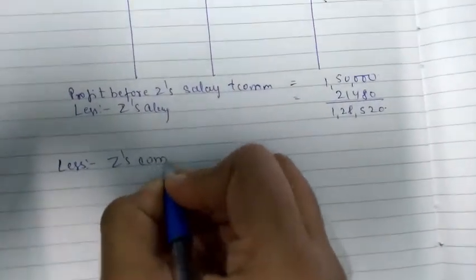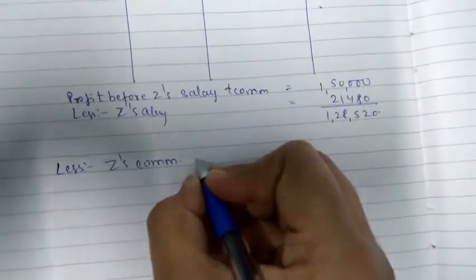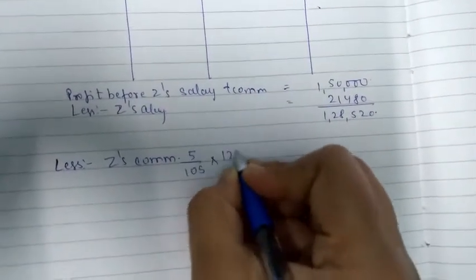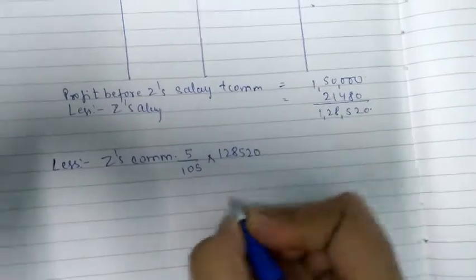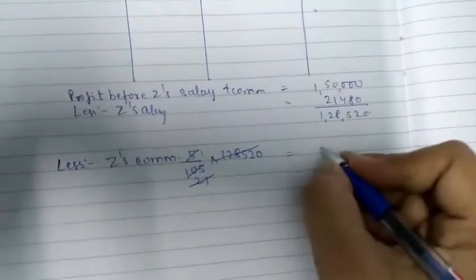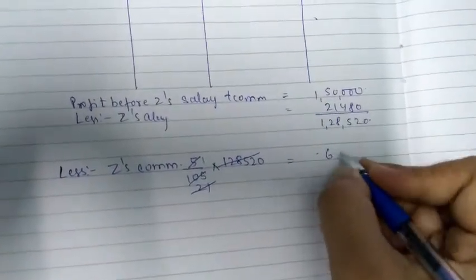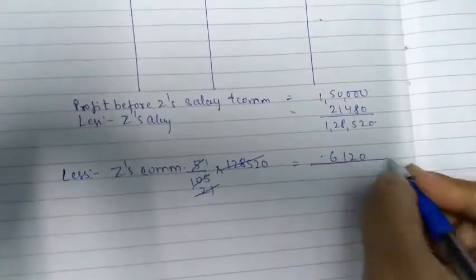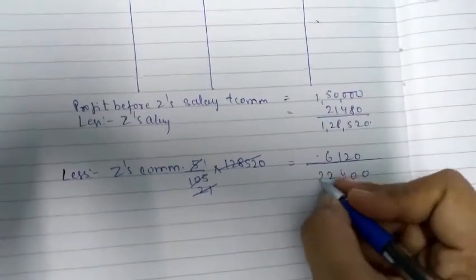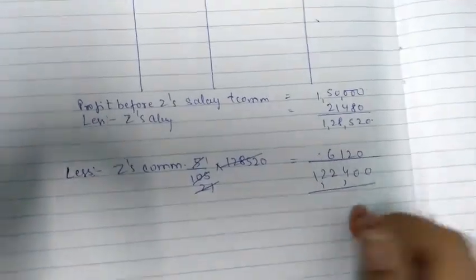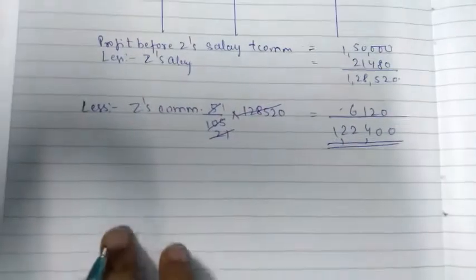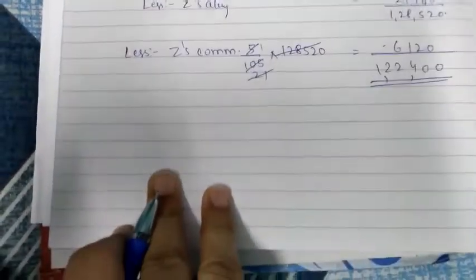We will also calculate this. We will less Z's commission. After tha, so it will be 5 upon 105 into 1,28,520. This becomes 6,120. When we minus this, it becomes 1,22,400.